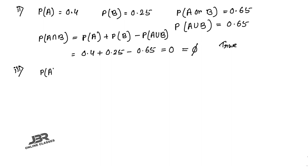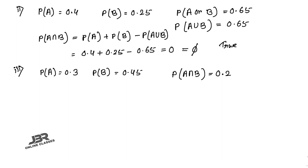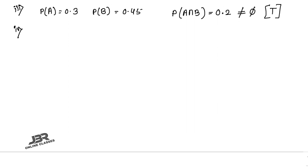Statement three: P(A) = 0.3, P(B) = 0.45, and P(A∩B) = 0.2, then A and B are not mutually exclusive. Since P(A∩B) = 0.2, which is not zero, A and B are not mutually exclusive. Answer: True, because for mutually exclusive events P(A∩B) must always be zero.